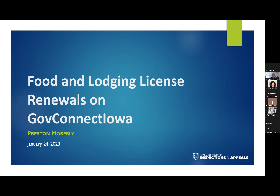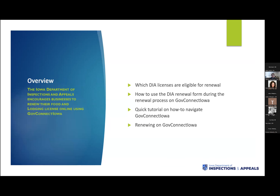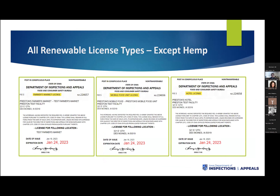My name is Preston Moberly. I'm with the Iowa Department of Inspections and Appeals, in the licensing unit. Today we're going to talk about some of the new functionality with the Round 2 of GovConnect Iowa. We'll quickly go over the licenses that are eligible for renewal and how to use the DIA renewal form included in our renewal process on the GovConnect Iowa platform. In Round 1, we made food service and retail licenses eligible for renewal. For Round 2, we have included all of our renewable license types with the exception of hemp.